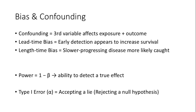Now, on to study power. Power, defined as 1-beta, represents the ability of a study to detect a true effect — the probability of correctly rejecting the null hypothesis when a real difference exists. Finally, type 1 error, or alpha, occurs when we wrongly reject the null hypothesis, essentially accepting a lie. We conclude that an effect exists when in fact it does not. Thank you for joining us in exploring the fascinating world of biostatistics.